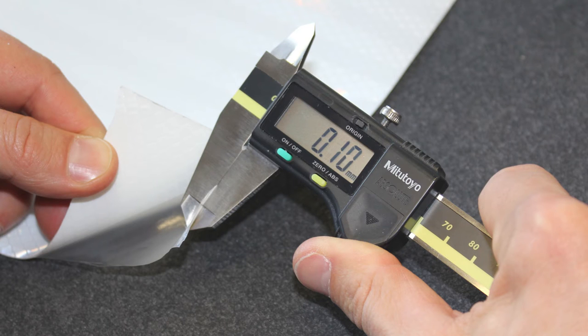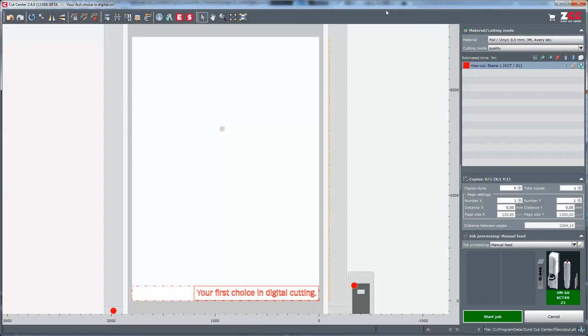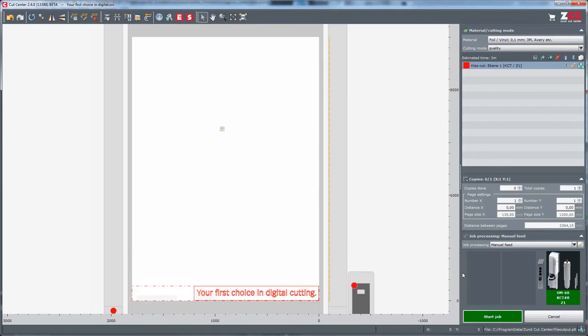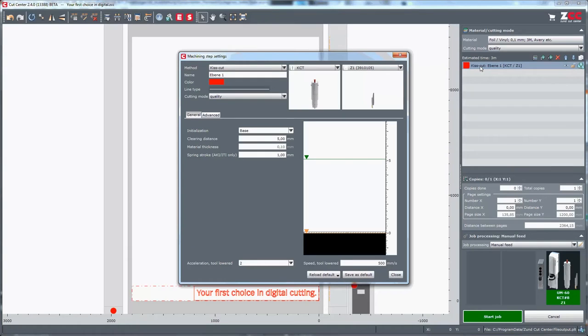Measure the thickness of the material. Enter the material thickness in ZCC. For the spring stroke, enter 1 mm. This will help compensate for variances during the cutting process.